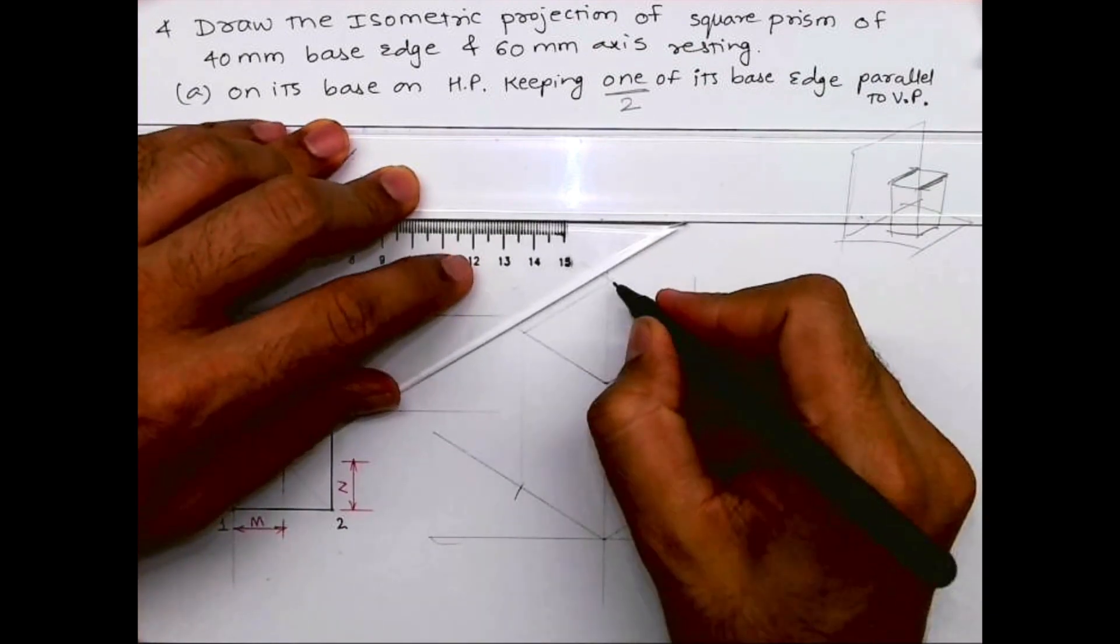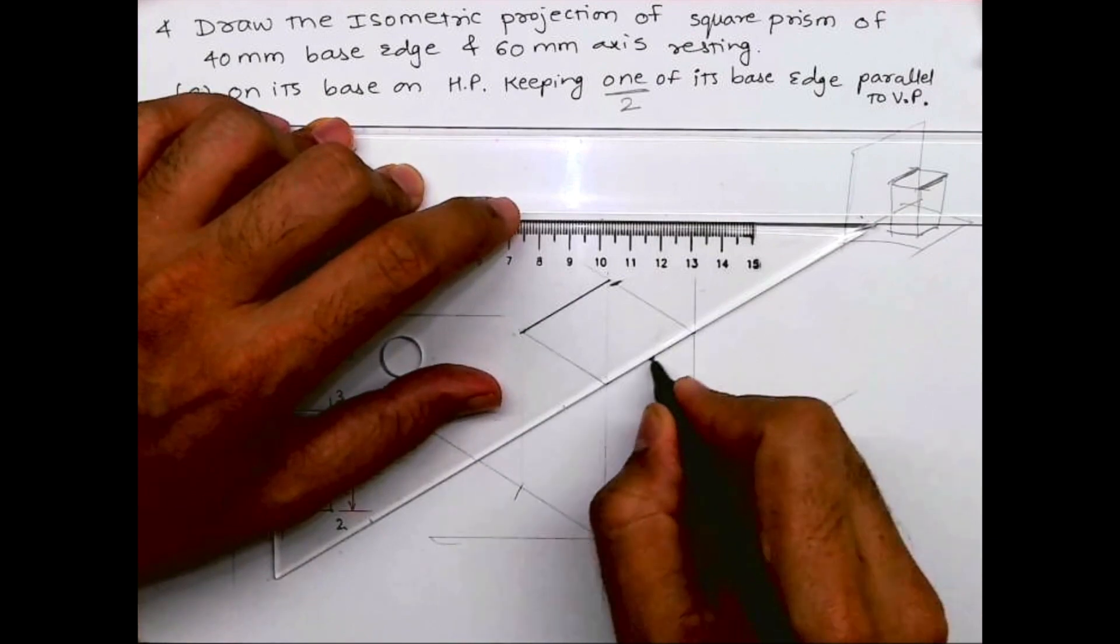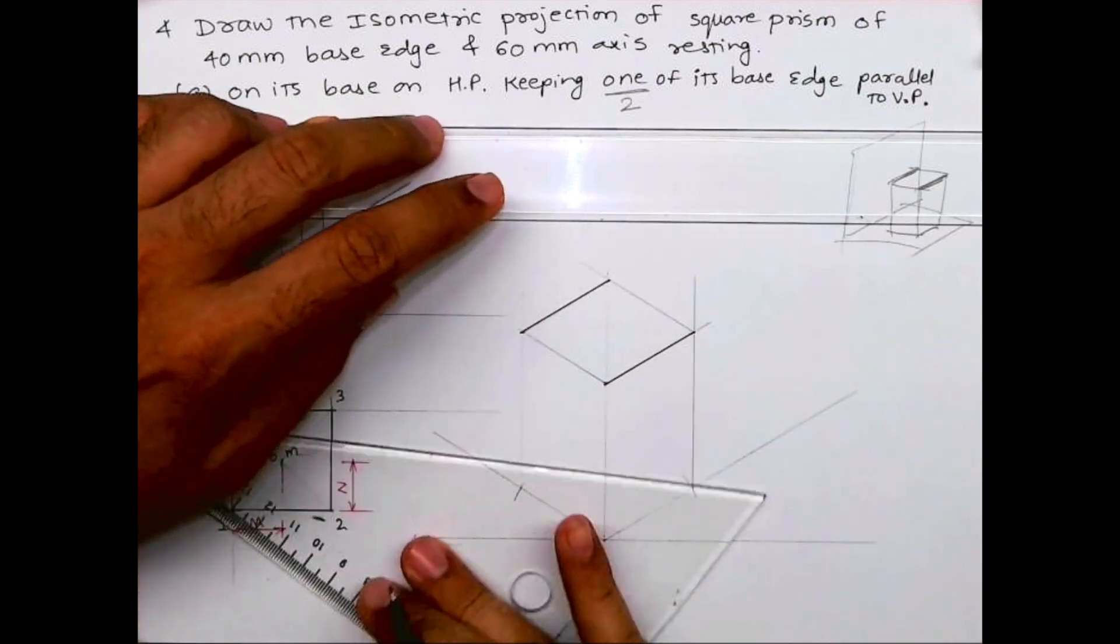So this way we'll get the square prism. We need to draw it dark.